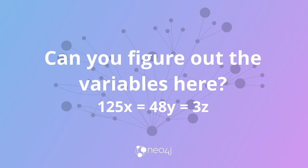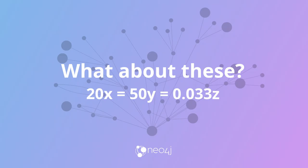But first let me ask you a question. Can you figure out what the following variables are? 125x equals 48y equals 3z. No, you probably can't yet. What about if I say 20x equals 50y equals 0.033z? No? Well, Neo4j could help you solve this. Let me explain.